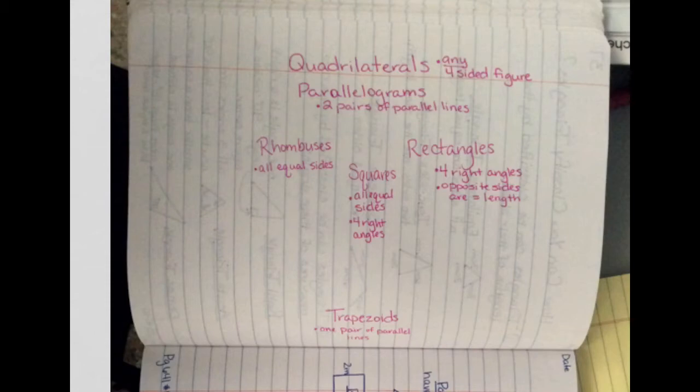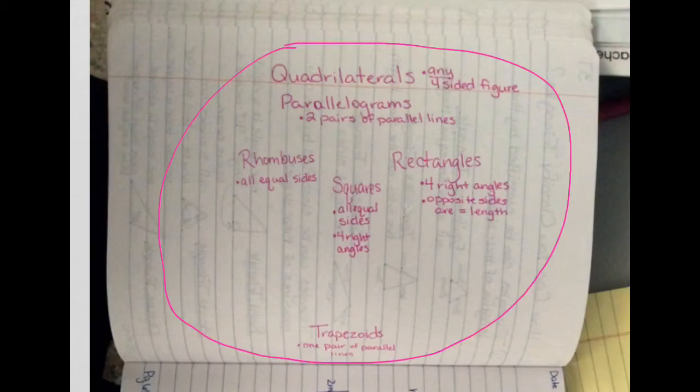We're going to group these together based on their attributes, their characteristics, and organize them that way. First of all, you're going to draw a big circle around all your words. All of these are quadrilaterals — trapezoids, squares, rectangles, parallelograms, and rhombuses all have four sides.